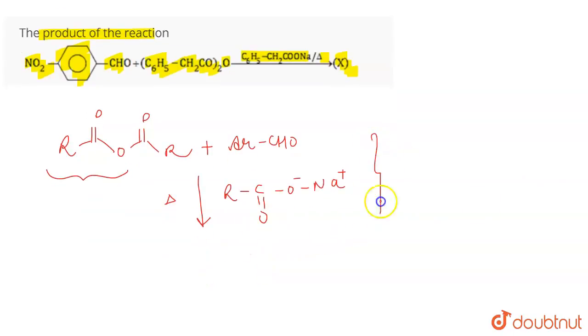This particular reaction is actually known as Perkin reaction or Perkin condensation reaction, and it leads to the formation of aryl-CH=CH-COOH. So this is the Perkin reaction that we have.